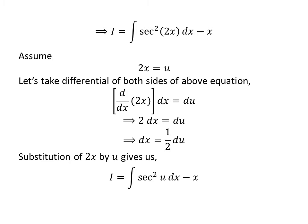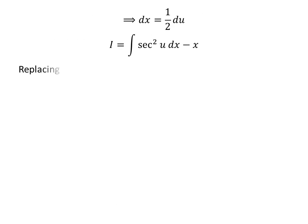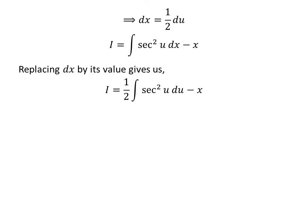Substituting 2 times x by u in integral i gives us i is equal to integral of square of secant of u. Replacing differential of x by half times differential of u gives us i is equal to half times integral of square of secant of u with respect to u minus x. As half is a constant, it is taken out of the integral.